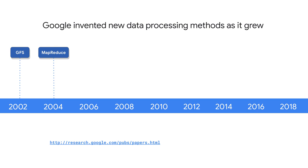MapReduce programs are automatically parallelized and executed on a large cluster of commodity machines. A year after Google published a white paper describing the MapReduce framework, Doug Cutting and Mike Caffarella created Apache Hadoop. Hadoop has moved far beyond its beginnings in web indexing and is now used in many industries for a huge variety of tasks that all share the common theme of volume, velocity, and variety of structured and unstructured data.